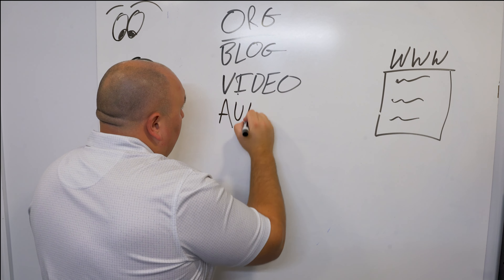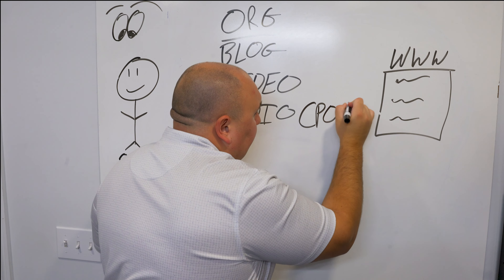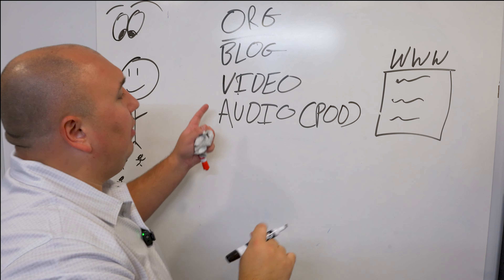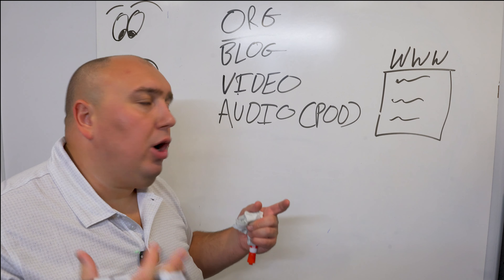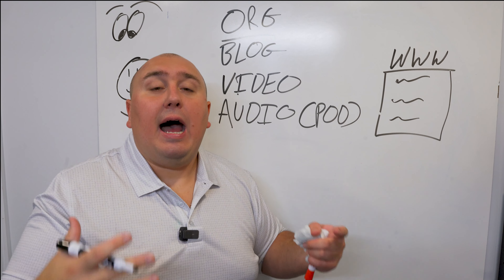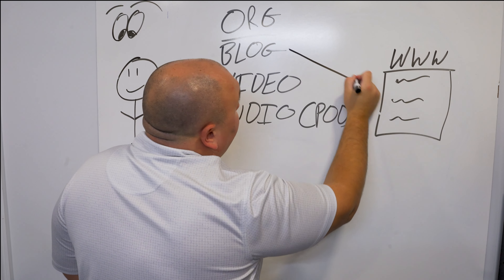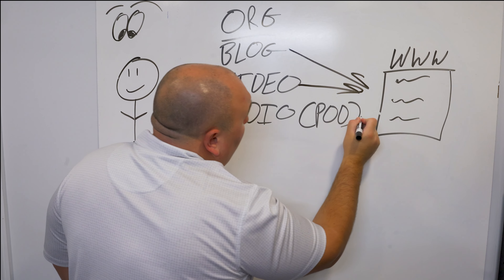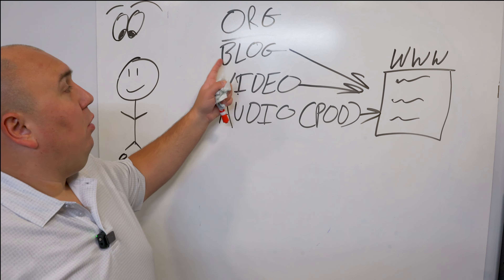How do we get an unlimited number of visitors to our website? They fall into two main areas: paid and organic. Those are the two main categories your traffic can typically fall into.